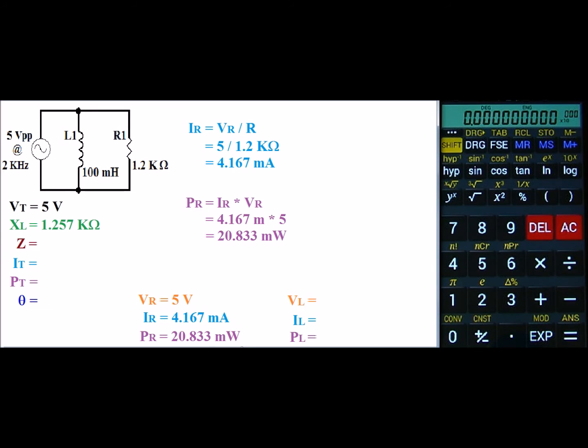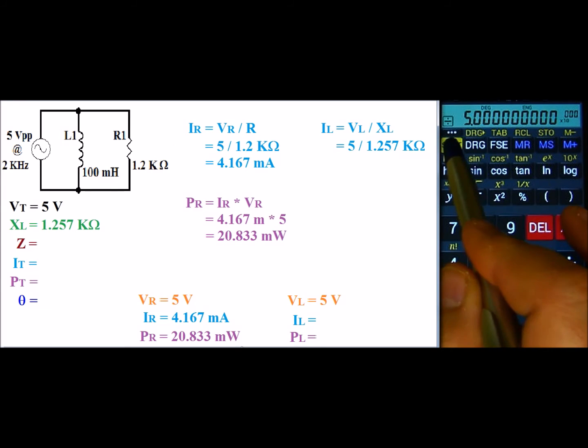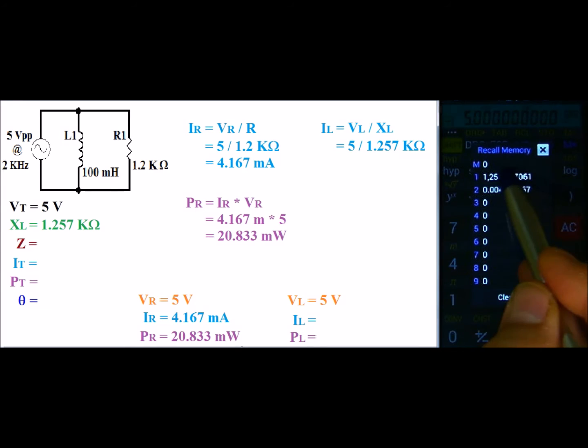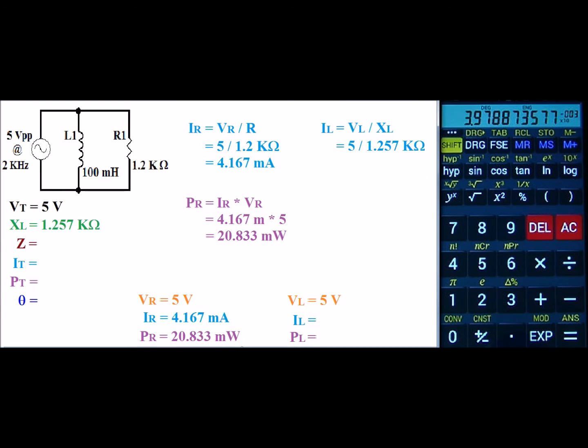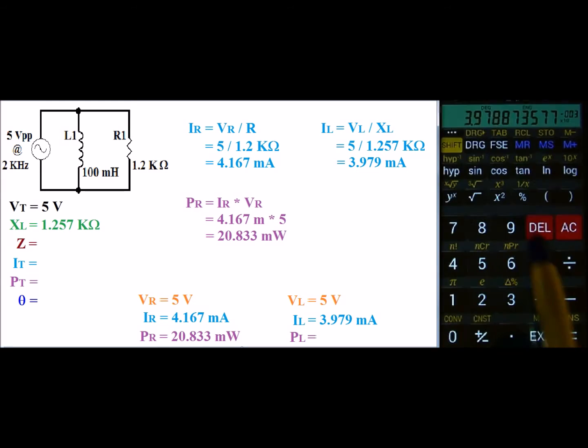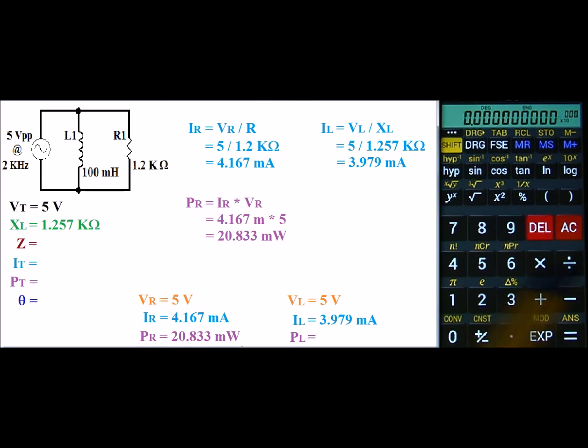Next, let's look at the inductor. Again, VL is going to be 5 volts. IL is going to be found by VL divided by X of L. So we have 5 volts divided by 1.257 K. So I have 5 divided by, and I'll go ahead and now recall my value for X of L. And that gives us a current of 3.979 milliamps. I will go ahead and store that value.